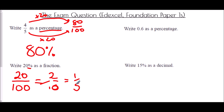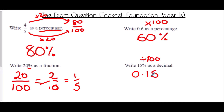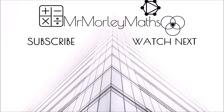For 0.6 as a percentage: multiply by 100 to get 60 percent. Finally, 15 percent as a decimal: divide by 100, so 15 over 100 is 0.15.